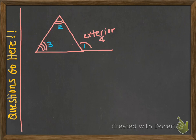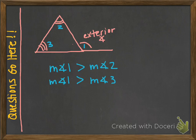I'm going to tell you the theorem, and then you can write it down. The theorem says that the measure of an exterior angle of a triangle is greater than the measure of either remote interior angle. This means the measure of angle one is greater than the measure of angle two, or the measure of angle one is greater than the measure of angle three — both of these are true.